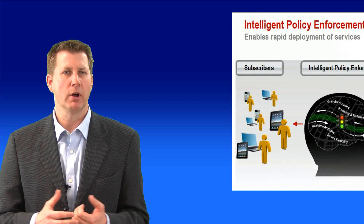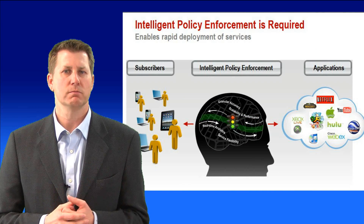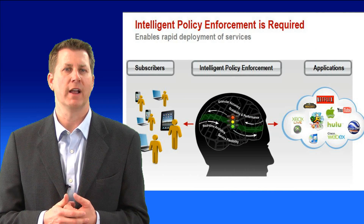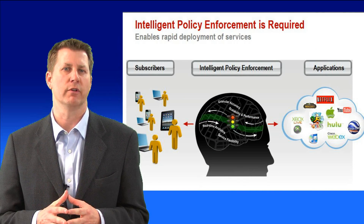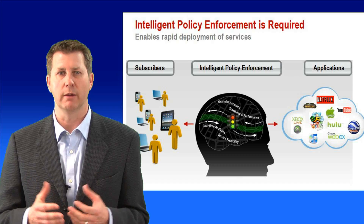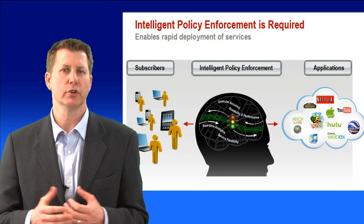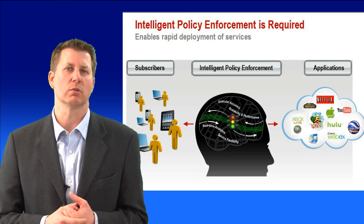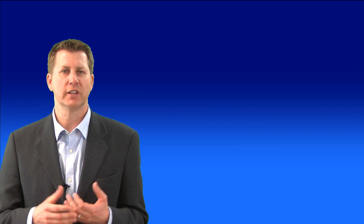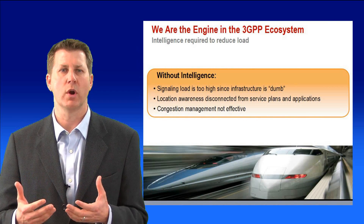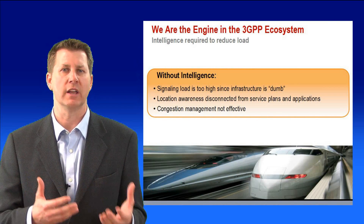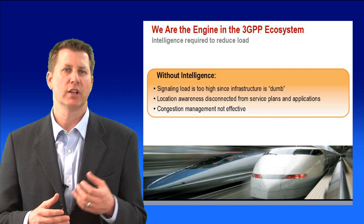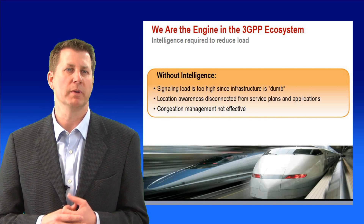So what's needed? LTE policy enforcement. Mobile operators need fine-grade intelligence on the behavior of their network and their subscribers. It's critical to know which applications are consuming the network resources. Without intelligence, the signaling load is too high, the location awareness is disconnected from the service plans, and the congestion management will be ineffective.